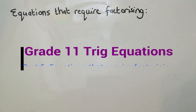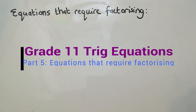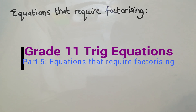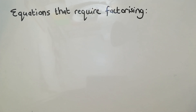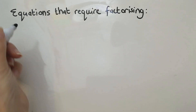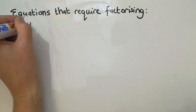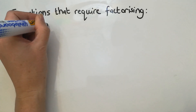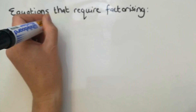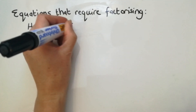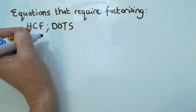Some equations in trig require factorizing, and you'll be able to recognize them because they look like you can't do anything with them — that's when you should start thinking about all the factorizing you've been doing probably since grade 9. What is factorizing again? You may have to take out a highest common factor, you may have a difference of two squares — all of this comes into trig now.